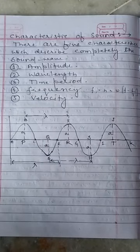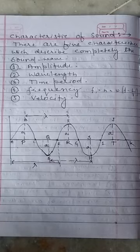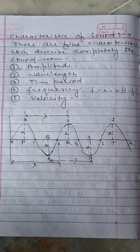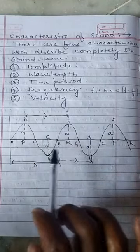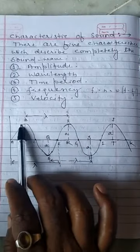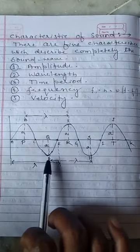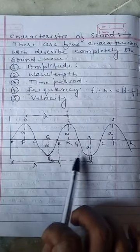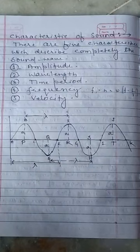Wavelength: the distance travelled by a wave in one period of vibration of the particle of the medium is called its wavelength. It is denoted by lambda (λ) and its SI unit is meter. Equivalently, wavelength is the distance between two successive crests or two successive troughs.